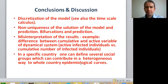Discretization of the model is playing a big role here. Different discretizations can have different convergence schemes to different stability regions of the parameters and the solution of the continuous system. This relates to time-scale calculus. Non-uniqueness of the solution of the model and prediction can happen—bifurcations and predictions can be multiple, and we need to choose the correct one or consider scenarios A, B, C, D. Misinterpretation of results can be coming, especially when we interpret the parameters, like active infected individuals versus cumulative number of infected individuals.